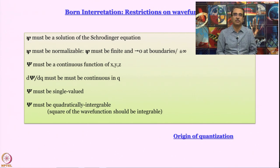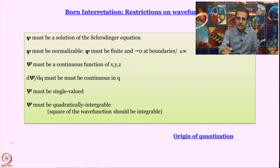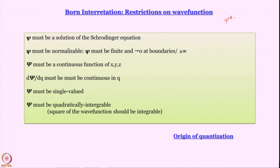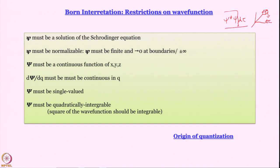So far we know that psi has to be a solution of the Schrödinger equation. It must be normalizable. Why? Because if psi psi-star is the probability density, then psi-star psi d-tau is the probability of finding the particle in a small volume element d-tau at a particular position. In Cartesian coordinates, d-tau will be dx dy dz. The probability of finding a particle somewhere in space is given by psi-star psi in a small volume element, and psi-star psi is the probability density.